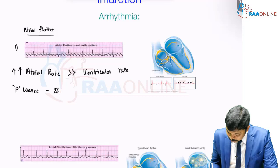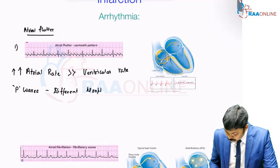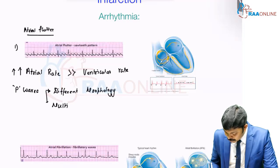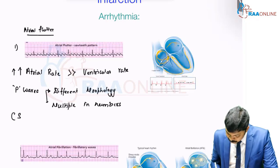The P-waves have got different morphology, and this varied morphology is going to be multiple in numbers — different morphology and numerous in numbers. Collectively, this is what is called the saw-tooth appearance.